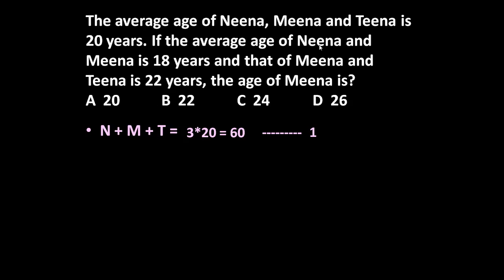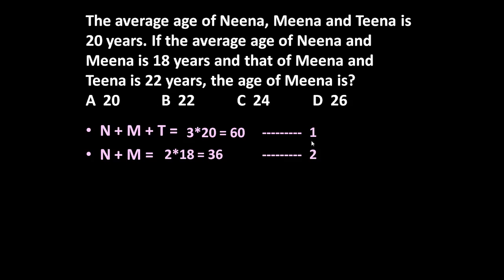If the average age of Nina and Mina is 18 years, it means the total age of Nina plus Mina is equal to 2 into 18, because average is 18 and they are 2 persons. So 2 into 18 is equal to 36. This is equation number 2.